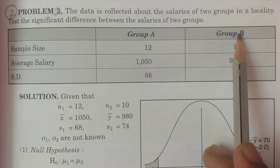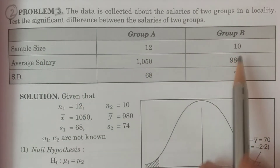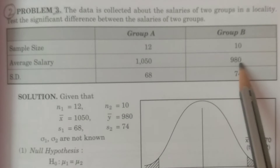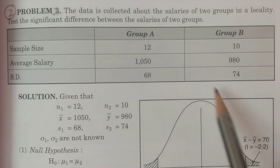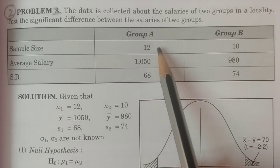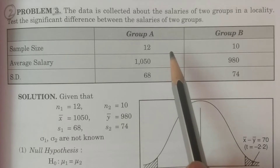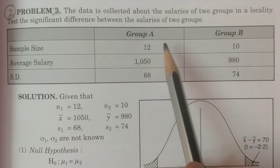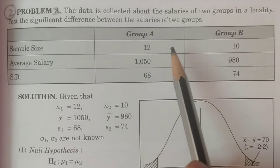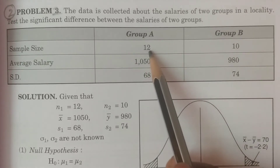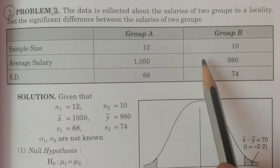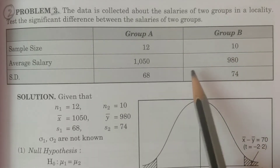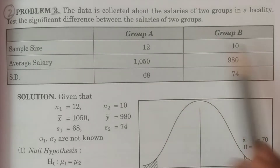What is the difference? I will tell you. Group A and Group B have sample sizes 12 and 10 — that is the major difference. Average salary is 1050 and 980, standard deviation 68 and 74. The only difference you have to observe between large sample and small sample is the sample size. If the sample size is less than or equal to 30, then it is a small sample and you have to conduct a t-test. Here 12 and 10 are less than 30, therefore it is a small sample. If the sample sizes are greater than 30, those are large samples — that is the only difference.